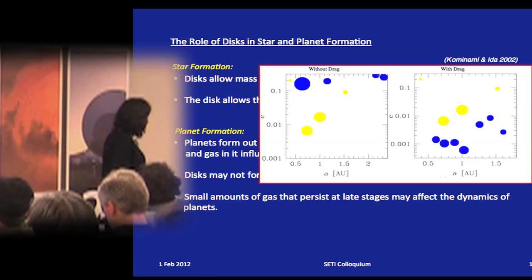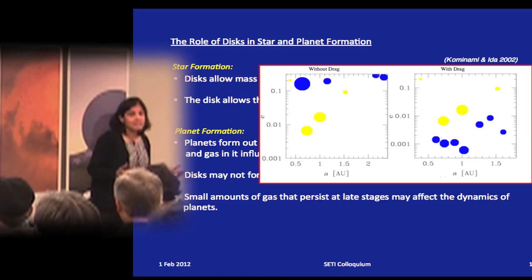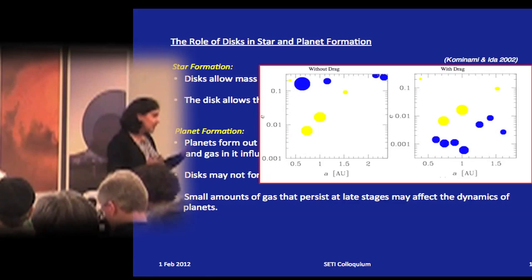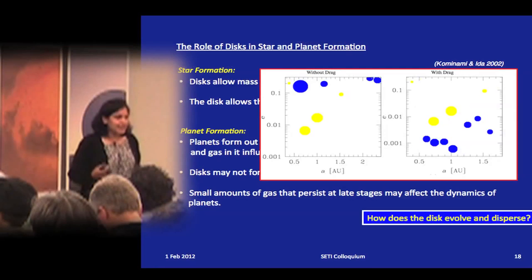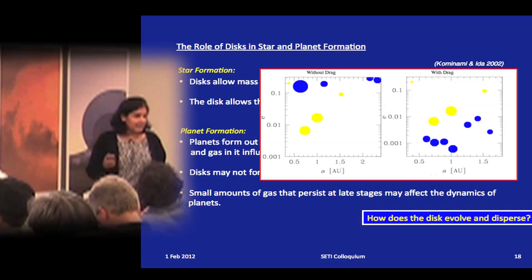Even very small amounts of gas left at late stages can play an important role through gas drag. This result by Kominami and Iida shows that without gas drag, planetary orbits remain quite eccentric, but even a small amount of gas can circularize those orbits. So trace amounts of gas, if left long enough, could be important for planetary dynamics. The main question we'll address is how discs evolve and how exactly they disperse.